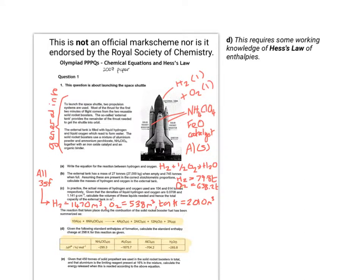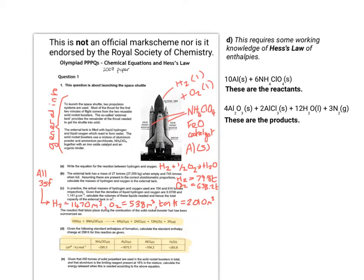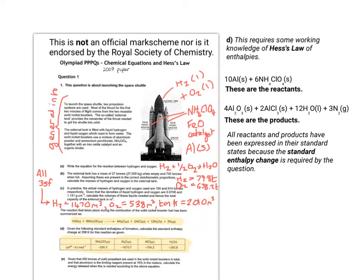The information you need is at the bottom of the screen, and I've highlighted it, so those are the important parts. I've taken the reactants and products and expanded them a bit on the right-hand side for you to follow. All the reactants and products have been expressed in their standard states because the standard enthalpy change is actually required. That doesn't necessarily mean they would be produced or reacted in those particular states you see them in the equation.